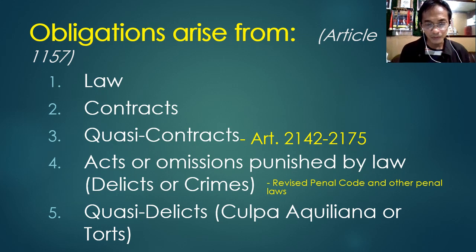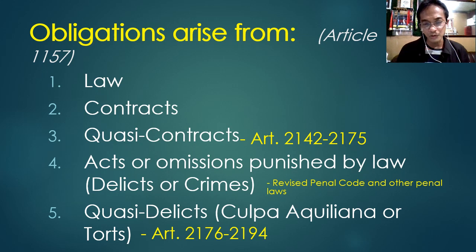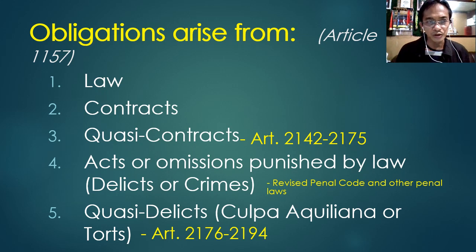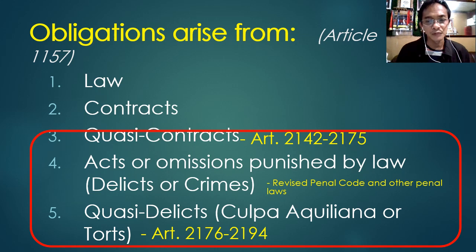Delicts are also found in law, particularly in the Revised Penal Code and other penal laws — laws that punish crimes — so number four is also part of law. And quasi-delicts, culpa aquiliana or torts, are found under Articles 2176 to 2194 of the Civil Code, so that is also law. Therefore three, four, and five are actually part of law, and some authors emphasize that obligations only arise from two sources: law and contracts.